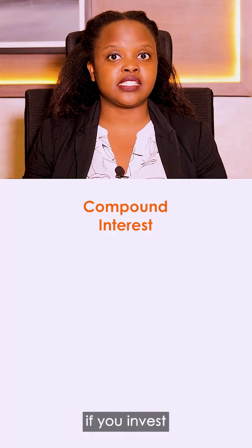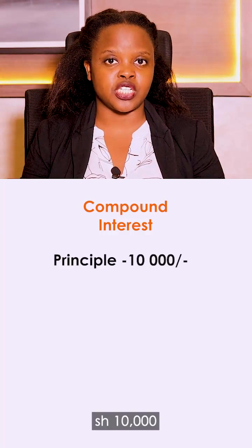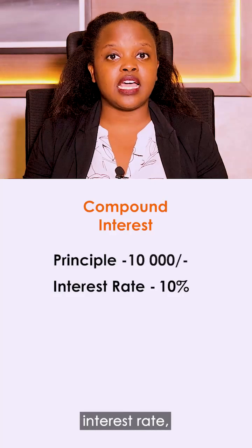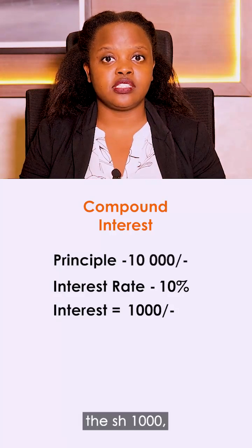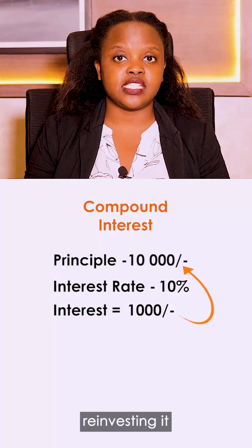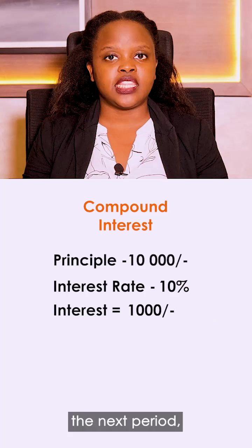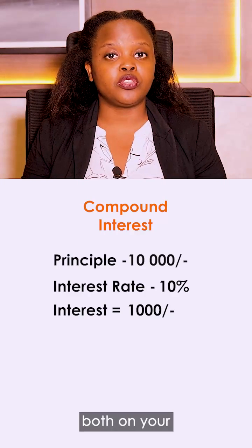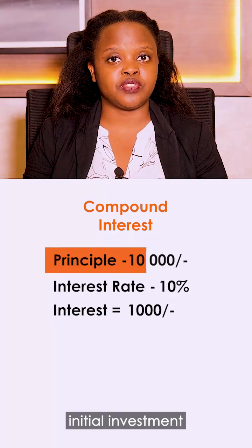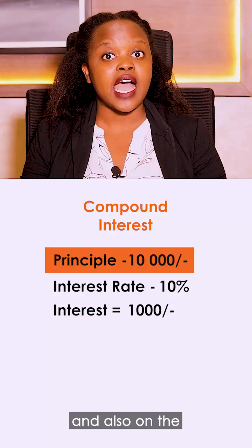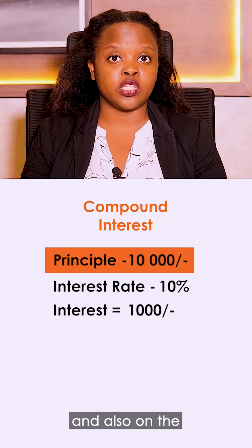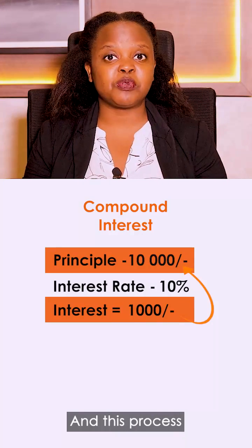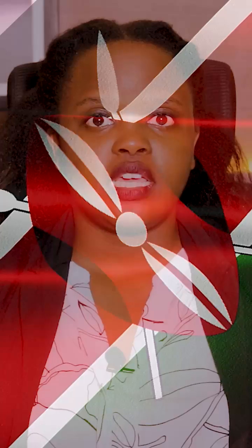For example, if you invest the same 10,000 shillings at the 10% interest rate and after getting the 1,000 shillings, reinvesting it into the same investment, the next period you will earn interest both on your initial investment of 10,000 shillings and also on the 1,000 shillings that you reinvested. And this process continues every period.